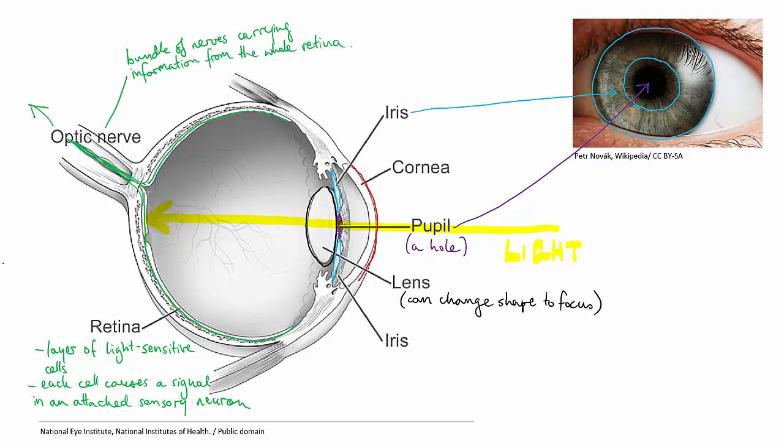Your brain processes the information, and you then see the image that passed through your eye a short time before.